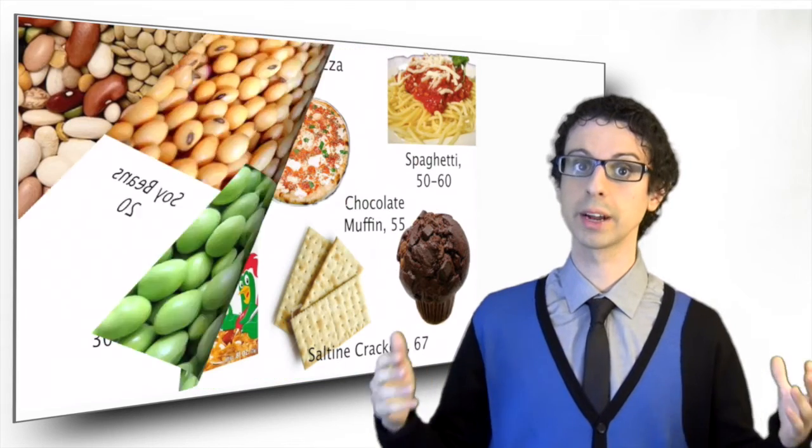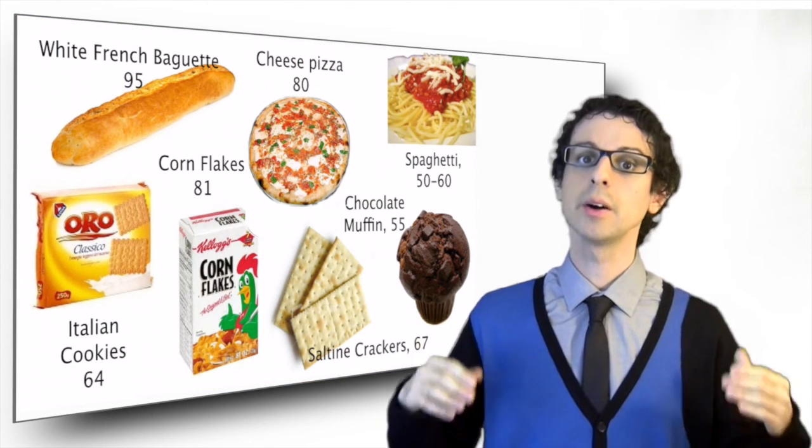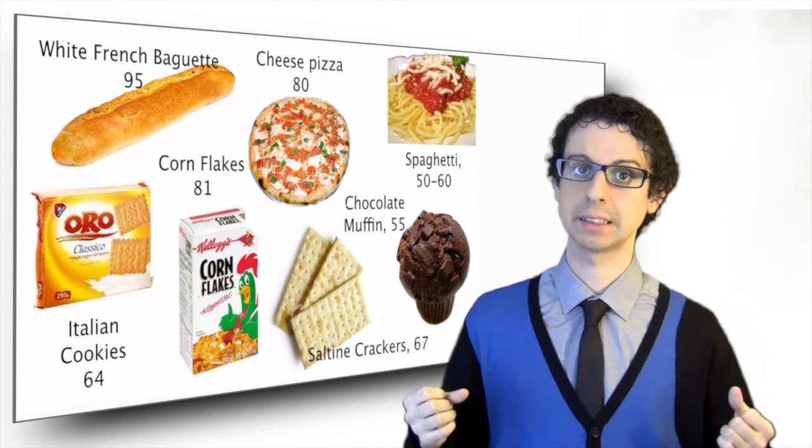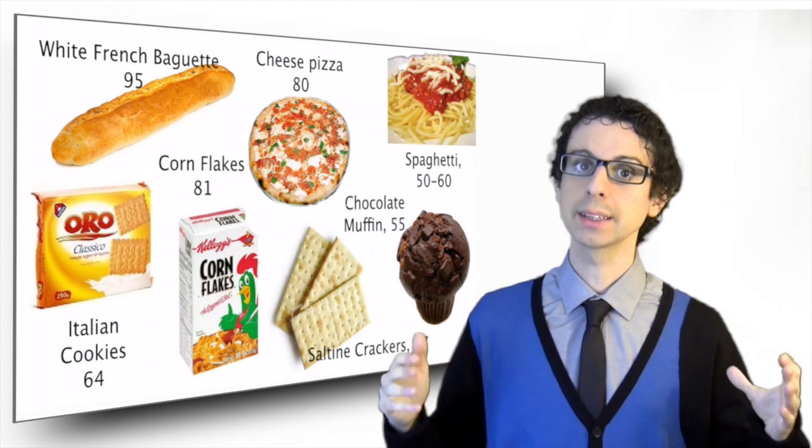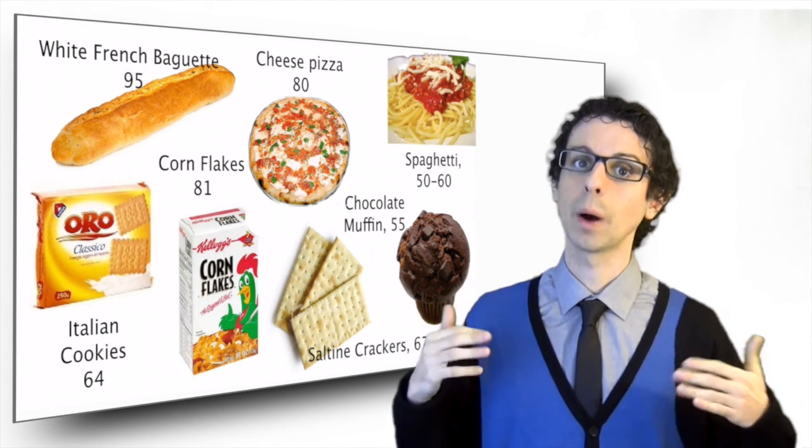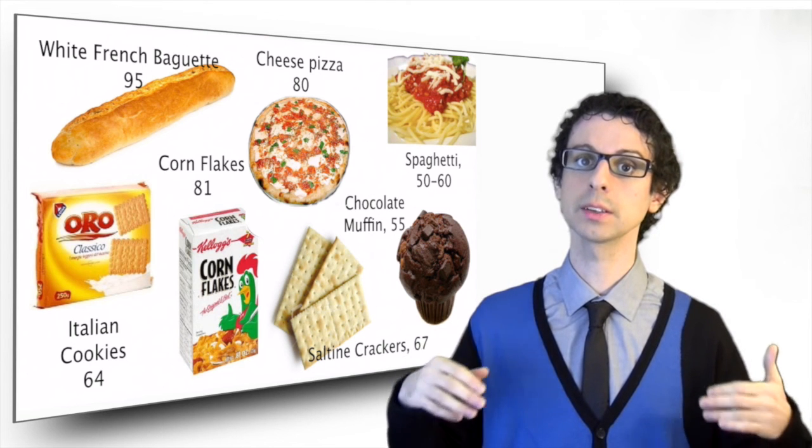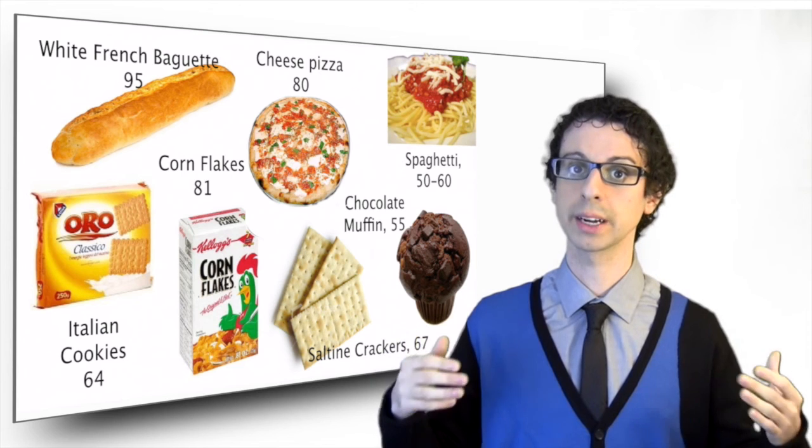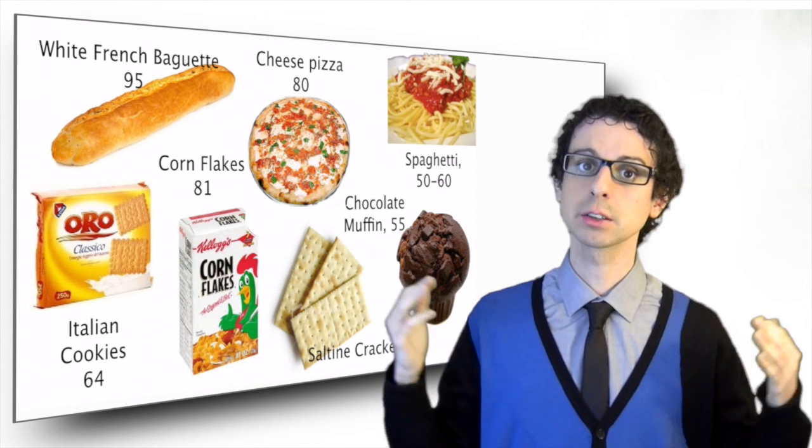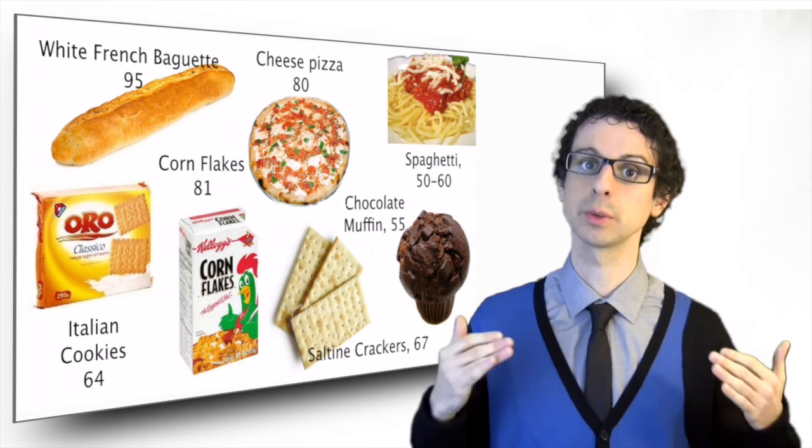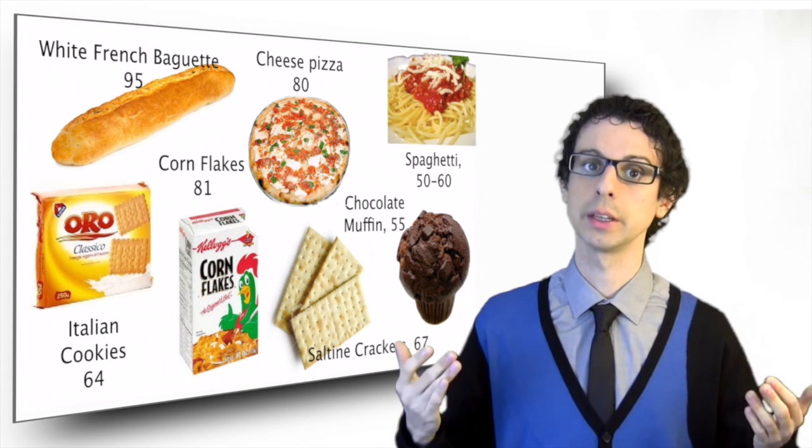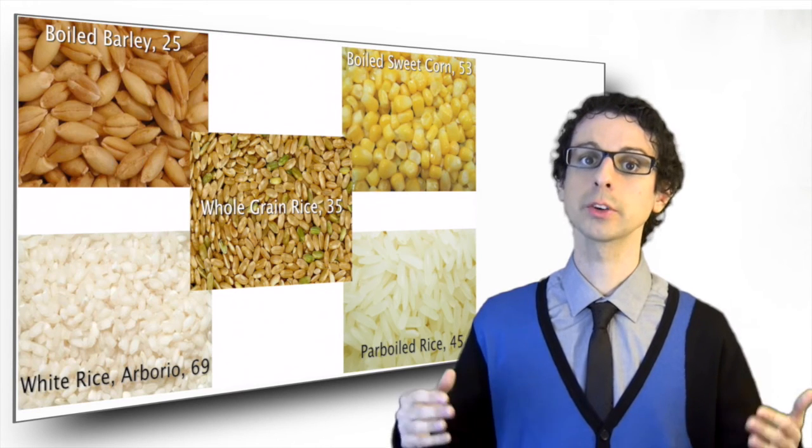The glycemic index of grains can be extremely variable. Refined grains and their derived products, of course, tend to have high glycemic indexes. White bread can be as high as 95, white rice around 70, cookies and saltine crackers between 60 and 70, pizza made with white flour can reach 80. Because of the extrusion process, white pasta has a lower GI between 50 and 60 depending on cooking time. The longer it's boiled, the higher the GI.